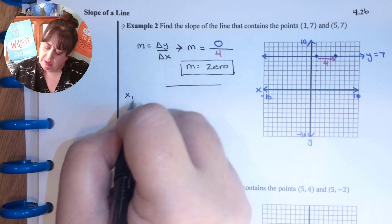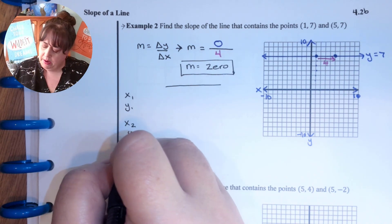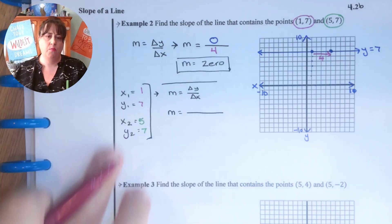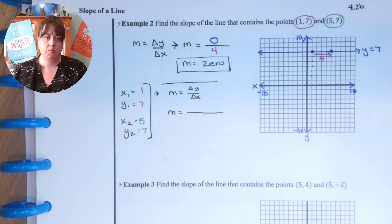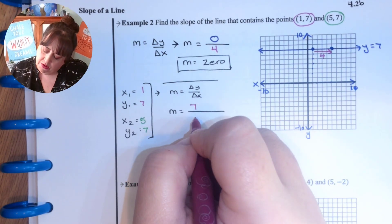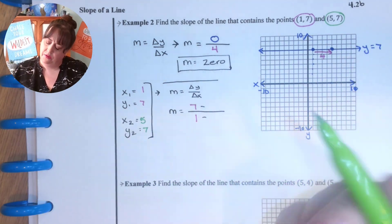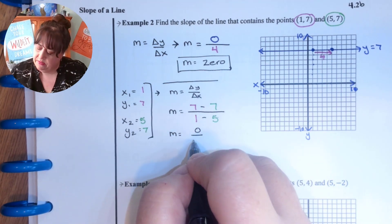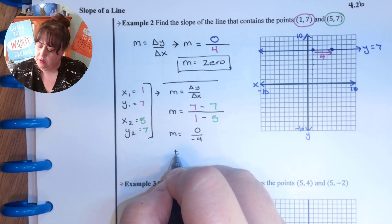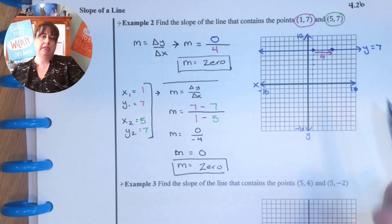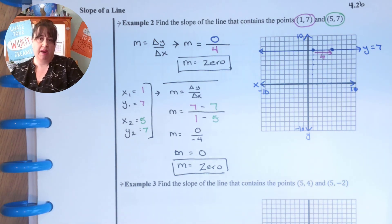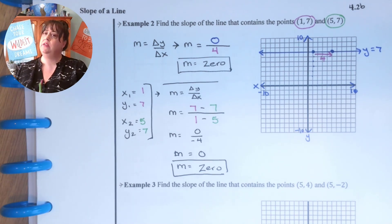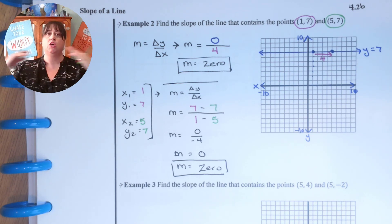Let's go ahead and calculate it. x₁, y₁, x₂, y₂. It's not going to matter which one I put first, just as long as I stick with the same point. So y first: 7 minus 7 over 1 minus 5. 7 minus 7 is 0. 1 minus 5 is negative 4. 0 divided by negative 4 is 0. Whether I did it by looking at the slope triangle or algebraically, I still get 0. This is called zero slope — when I have a horizontal line.